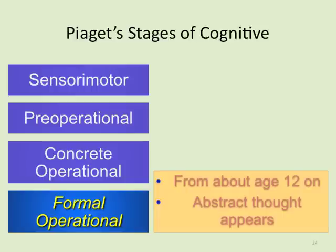Formal operational is from about age twelve onward, when abstract thought appears. This is when you start getting into more complicated issues — caring about peace, religion, and questions like 'What does it mean to be religious?' That's all formal operational: abstract, higher-order thinking.